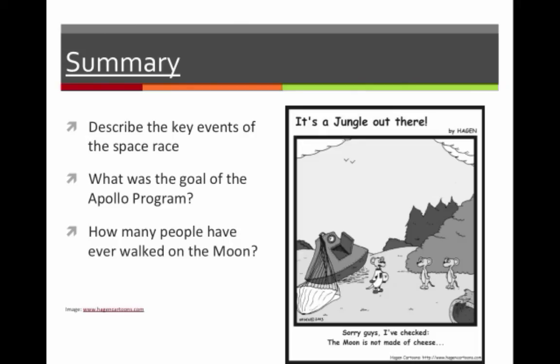So here we go with summary time. Describe the key events in Space Race. These don't have to be very long. You can just list a couple of them. What was the goal of the Apollo program, and that's the one that John F. Kennedy was telling you about, our president, and how many people have ever walked on the moon total as of today. So, thank you for watching.